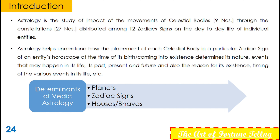The fundamental three determinants of Vedic Astrology are: planets, zodiac signs, and Bhavas — also known as the houses.